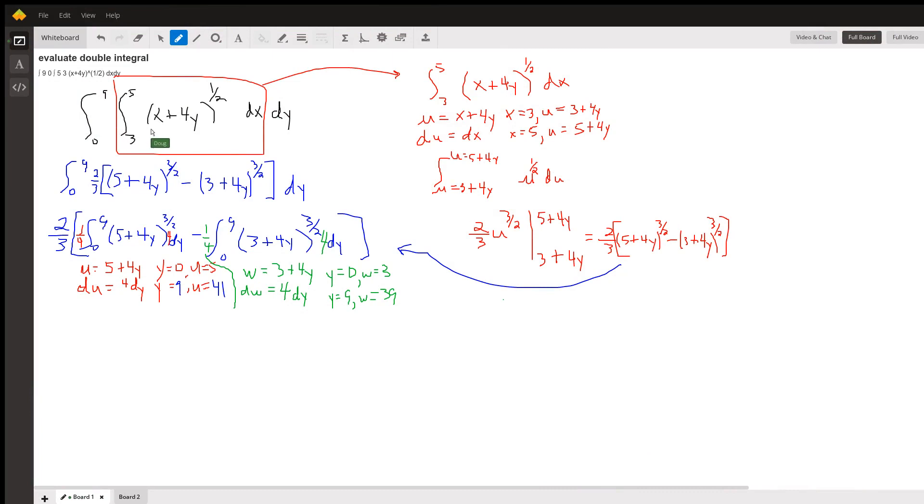We've got a double integral, x plus 4y, square root of that quantity, which I wrote as x plus 4y to the one-half power.